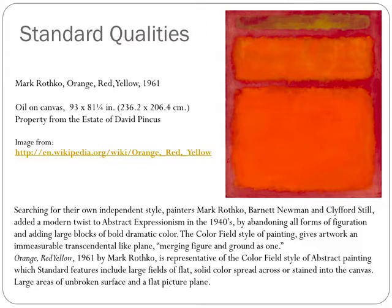Orange Red Yellow, from 1961, by Mark Rothko, is representative of the color field style of Abstract Painting. In color field painting, the standard features include large fields of flat, solid color, spread across or stained onto the canvas, large areas of unbroken surface, and a flat picture plane.